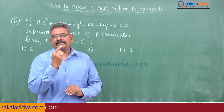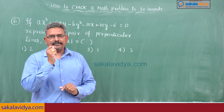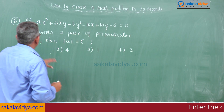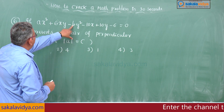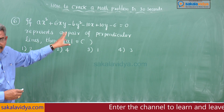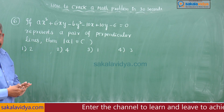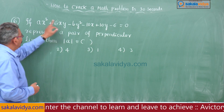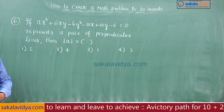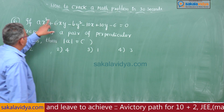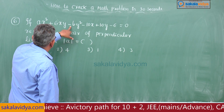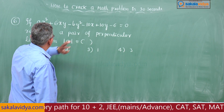The first condition for perpendicular lines: the coefficient of x² plus the coefficient of y² must equal 0. So A - B = 0, meaning A = B. The x² and y² coefficients are numerically equal but opposite in sign.